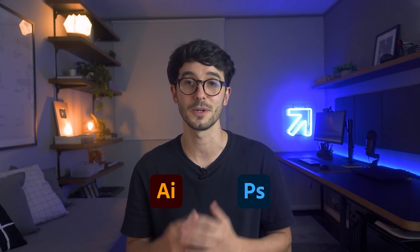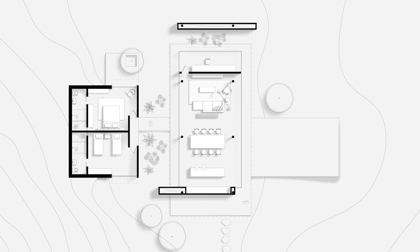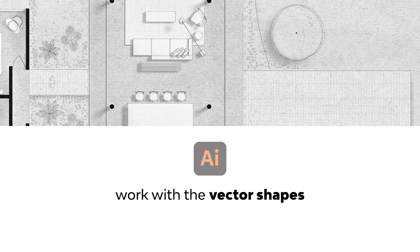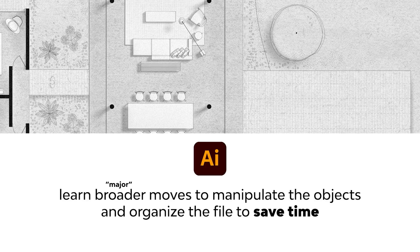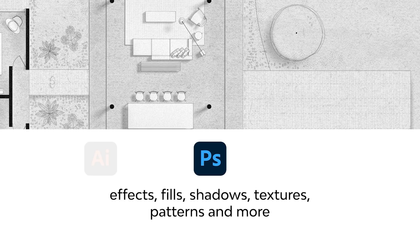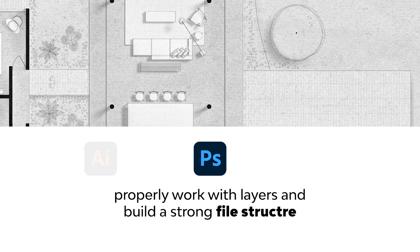Illustrator and Photoshop are the tools to do that. In these lessons, we're going to learn how to go from a basic PDF to a final result using different techniques. We're going to work with vector shapes in Illustrator, learn some smart moves to manipulate objects and organize the file to save time, and in Photoshop, test different effects, feels, shadows, textures, patterns, and a lot more. We're going to learn how to properly work with layers and build a strong file structure so that future changes are easily done.